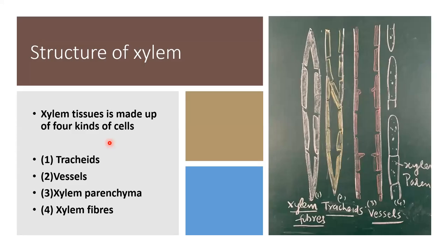Xylem is made up of four kinds of cells: tracheids, vessels, xylem parenchyma and xylem fibers. These are the four kinds of cells present in the xylem. Because of these cells, xylem is also called a complex permanent tissue.